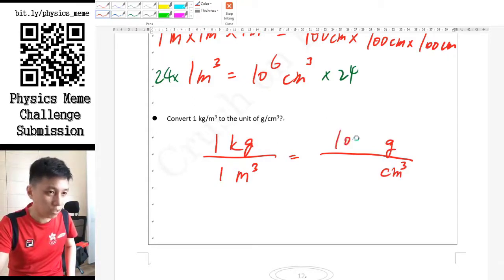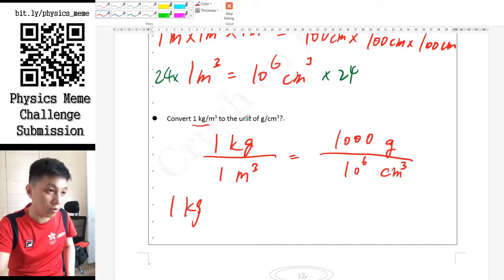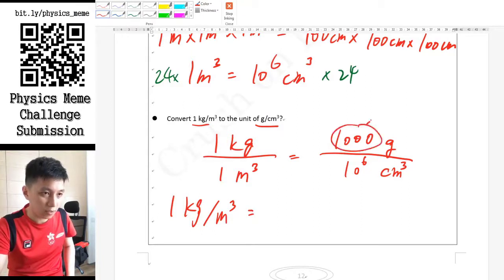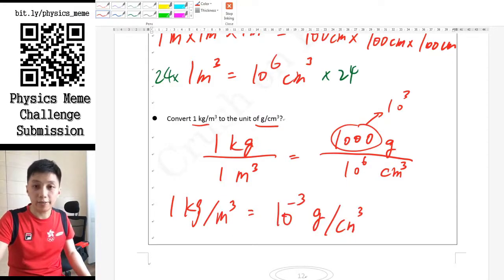One kg would be 1000 grams, and one meter cube, like what we did earlier, would be 10 to the power of 6 cm cube. If you try to simplify this - by the way, this is a unit of density, kg per meter cube - this in fact is 10 to the power of 3, right? So I hope you have learned in math that would be 10 to the power of negative 3 gram per cm cube. That would be the answer.